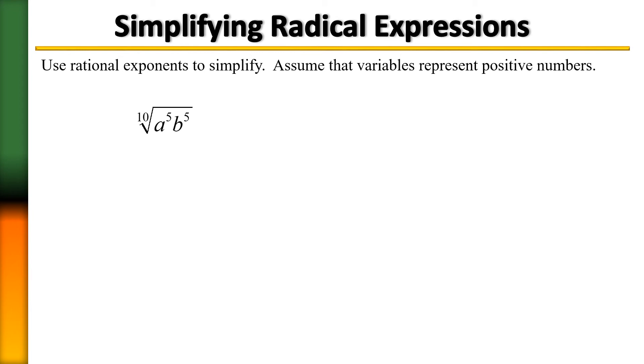So to simplify this radical expression, let's convert it to a rational exponent. Our base a is going to have what fraction? If you said 5/10, you are correct. And b will also have the same fraction as its exponent. So we have a to the 5/10 times b to the 5/10.